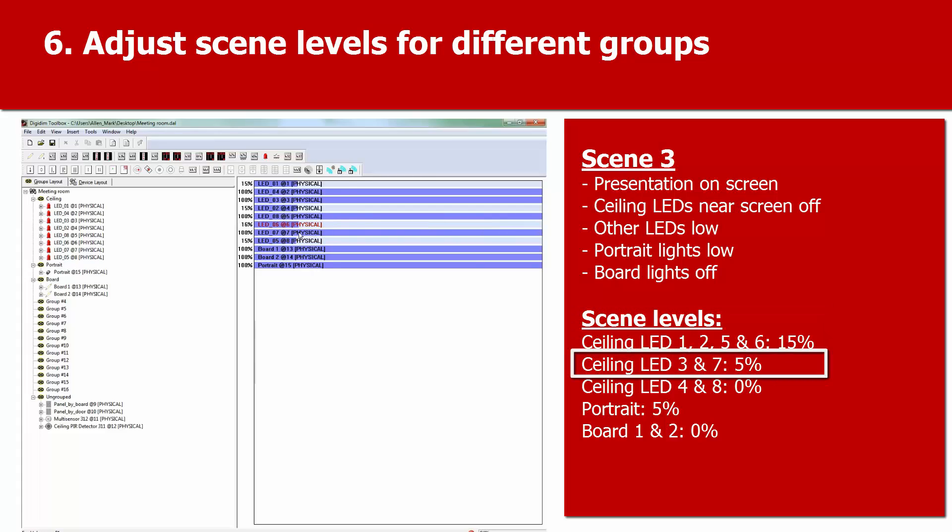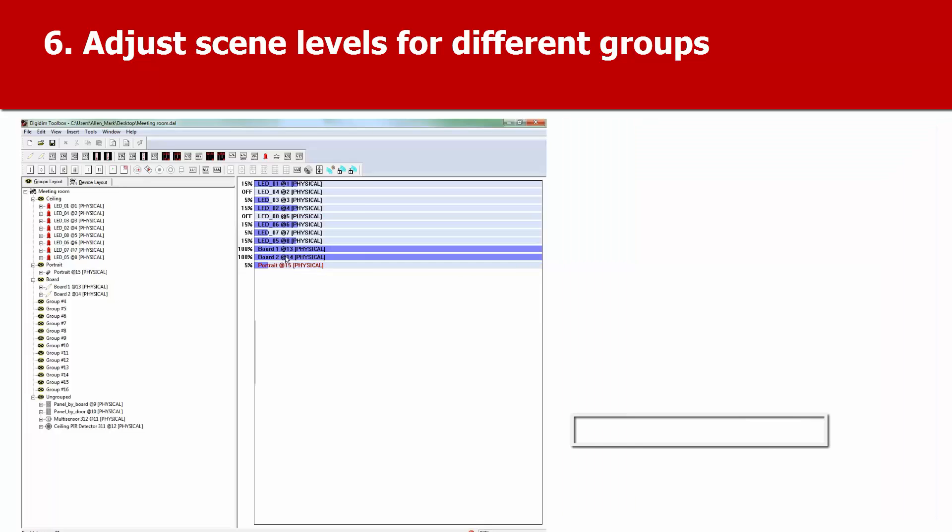We'll set LEDs 3 and 7 to 5%. And LED drivers 4 and 8 go to off, 0%. We'll set the portrait lights, or the artwork lights, to 5%.